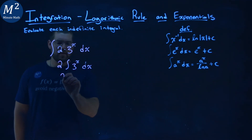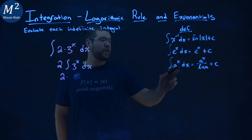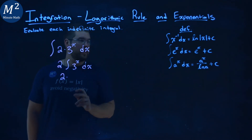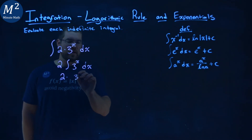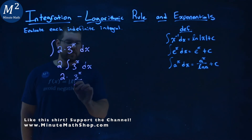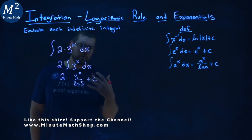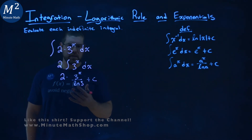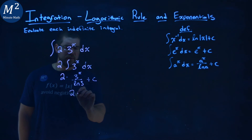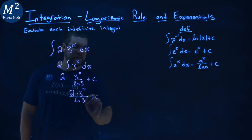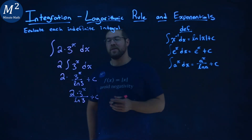The 2 stays up front multiplied, and they said a to the x is a to the x over the natural log of a, with a being 3. So we have 3 to the x power over the natural log of 3, then plus c. We can rewrite this to be one big fraction: 2 times 3 to the x power over the natural log of 3 plus c. And that is our final answer.